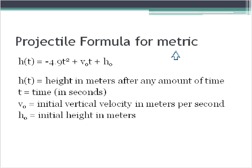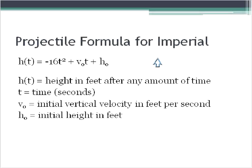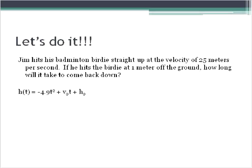This is the formula for metric, and then the formula for imperial, in other words, when it's in feet per second, is negative 16t squared, plus vt, plus h. And I'll show a question with each of these using both the metric and the imperial. Our first question says, Jim hits a badminton birdie straight up at the velocity of 25 meters per second. If he hits the birdie at one meter off the ground, how long will it take to come back down?